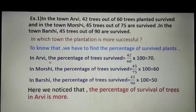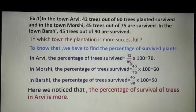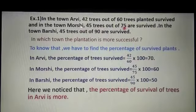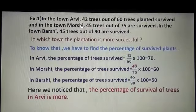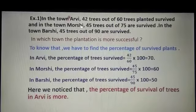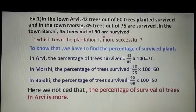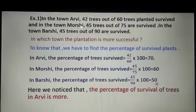In R.V., the percentage of trees survived is 42 upon 60 into 100, which equals 70%. In Morshi, the percentage is 45 upon 75 into 100, which equals 60%. In Barsi, total trees planted are 90 and 45 trees survived, so the percentage is 45 upon 90 into 100, which equals 50%.